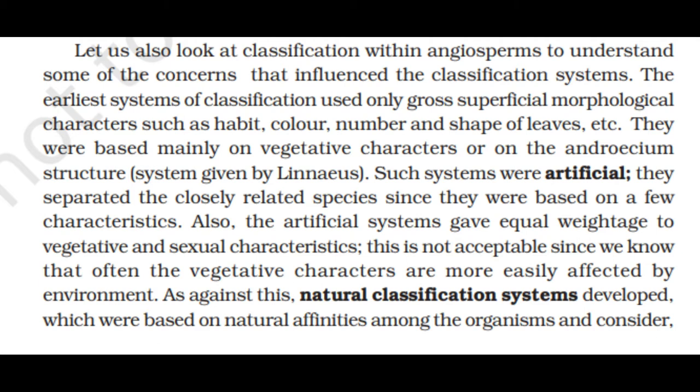The earliest systems of classification used only gross superficial morphological characters such as habit, color, number and shape of leaves, etc. They were based mainly on the vegetative characters or on the androecium structure. Such systems were artificial. They separated the closely related species since they were based on a few characteristics. Also, the artificial systems give equal weightage to vegetative and sexual characteristics.